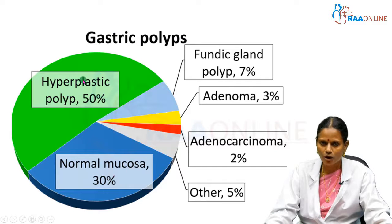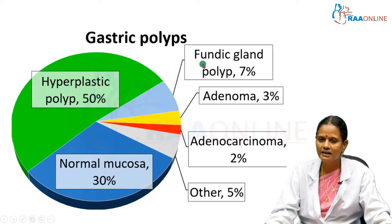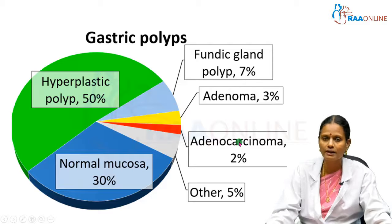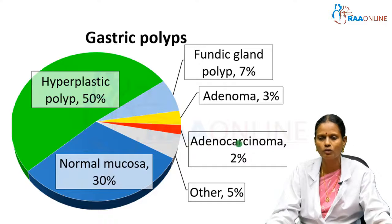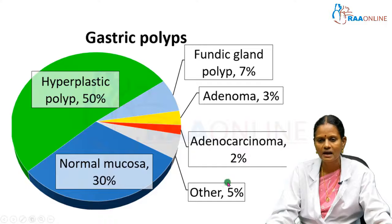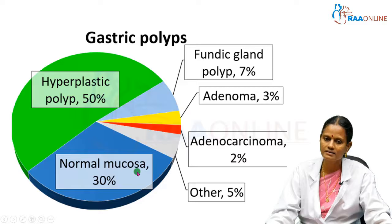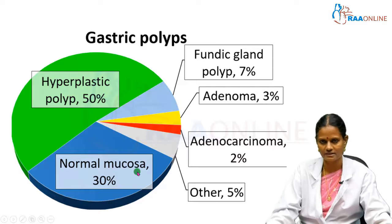Hyperplastic polyp constitutes 50%, fundic gland polyp constitutes 7%, adenomatous 3%, and rarely adenocarcinomas can also present as a polypoidal growth, constituting 2%. Other types constitute 5%, whereas normal mucosa occurs in 30%.